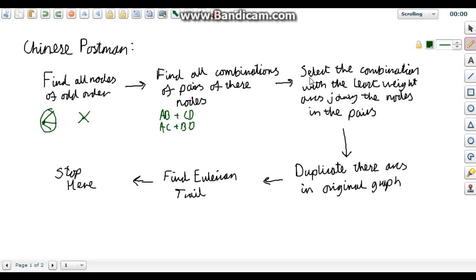You then want to select whichever combination will have the least weight arcs joining the nodes and the pairs. So maybe A to B was three and C to D was four. So it would equal seven. Maybe A to C was ten and B to D was two and it would equal twelve.